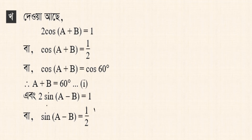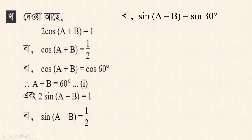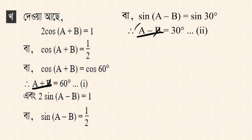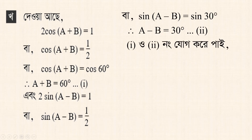sin(a minus b) equals half. sin 30 degrees equals half, so sin(a minus b) equals sin 30 degrees. Therefore a minus b equals 30 degrees. So we have: a plus b equals 60 degrees and a minus b equals 30 degrees.